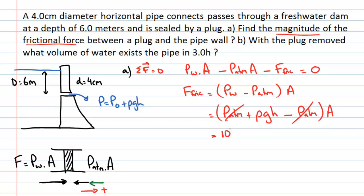Plugging in the numbers: the density of water is 1000 kg/m³, gravity is 9.8 m/s², and the depth h is 6 metres. The area of the circular pipe cross-section is π times the radius squared; the diameter is 4cm so the radius is 0.02 metres. This gives a frictional force of 74 Newtons.